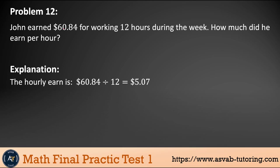Problem 12: John earned $60.84 for working 12 hours. How much did he earn per hour? Divide $60.84 by 12. Twelve goes into 60 five times (5 × 12 = 60). Move the decimal to the top. Bring down 8 — can't divide 8 by 12, so write 0. Bring down 4: 12 goes into 84 seven times (7 × 12 = 84). Answer: $5.07 per hour.